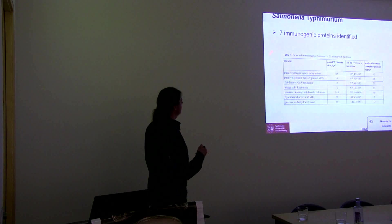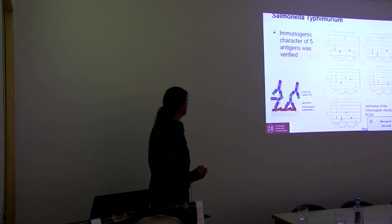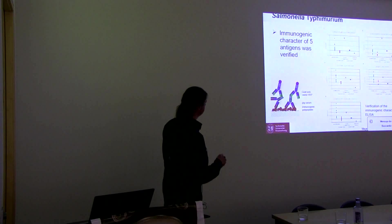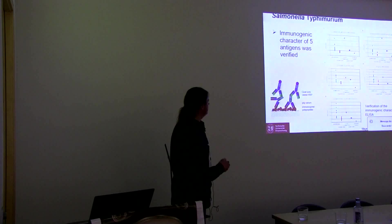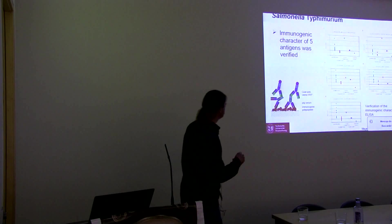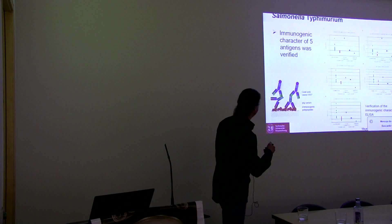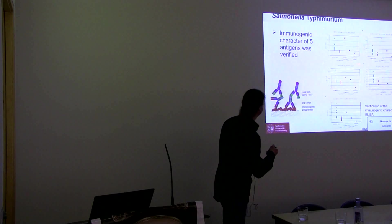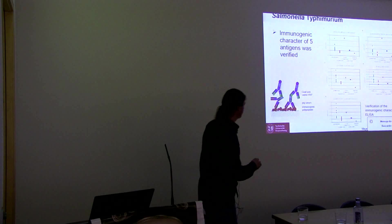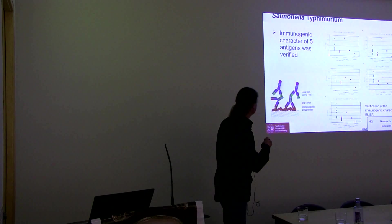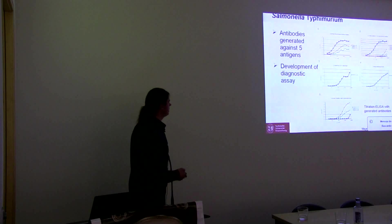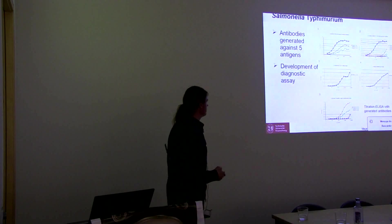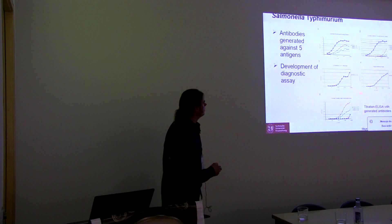Here we also identified seven immunogenic proteins and were able to produce the full-size proteins in E. coli — but only five of the seven. We validated the immunogenic character of these biomarkers using positive sera, negative sera, the immune sera used for the selection procedure, and piglet sera assumed to be negative as a control. Comparing the green dots with the red dots, we verified the immunogenic character.